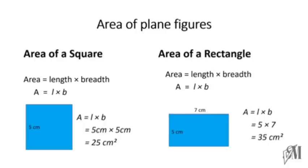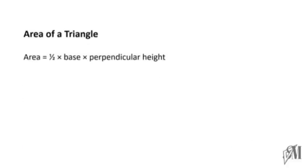Moving on to the next type of plane figures, that is area of a triangle. When you come to an area of a triangle, it is equal to half into base into its perpendicular height from the taken base. Remember that very carefully — you have to very carefully select the base and the perpendicular height. In simple terms you can write it as A = half into base into height, where b and h refer to base and the perpendicular height.